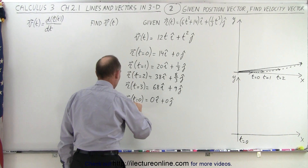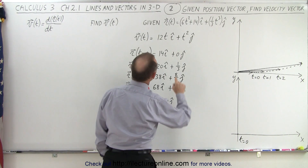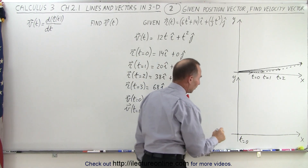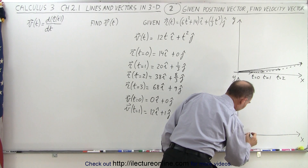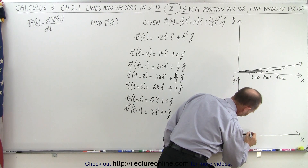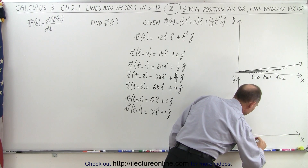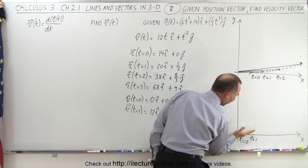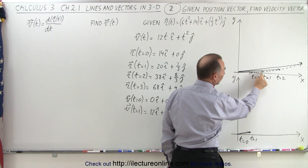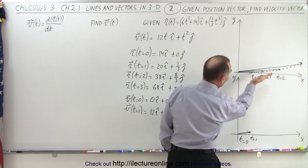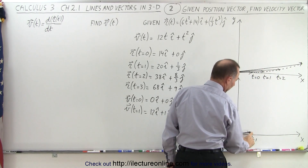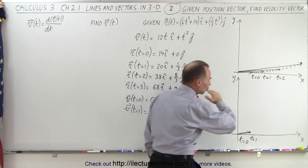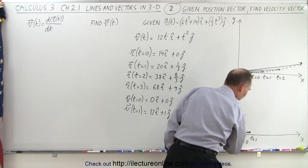At t equals 1, the velocity vector is 12i plus 1j, so 12 in the x direction and 1 in the y direction. You can see the velocity vector mirrors the change in position from t equals 0 to t equals 1, which is what we'd expect. At t equals 2, the velocity is 24i plus 4j, and you can see that vector would get us from one position point to the next.